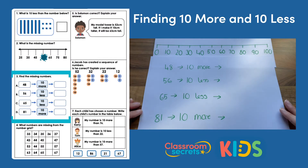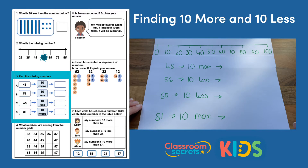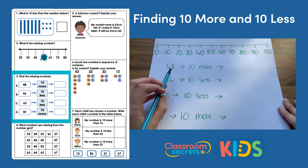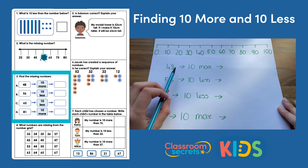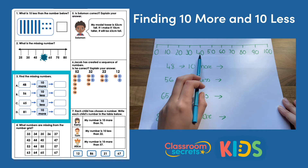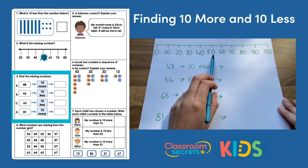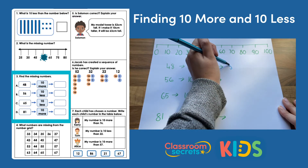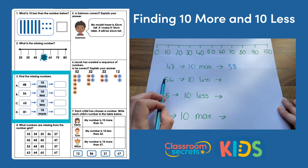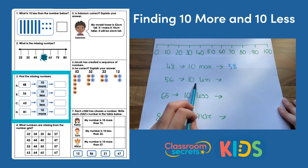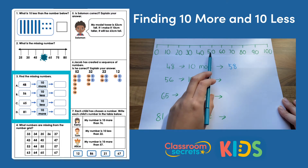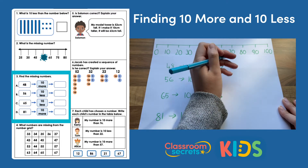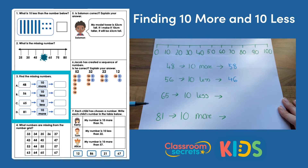The same rule applies here. Remember the ones digit always stays the same. If it's more we add 10, if it's less we take 10 away. So we've got 48 — we need to work out 10 more. 10 more than 40 is 50, the ones stay the same, so it's 58. Then 56, 10 less. 10 less than 50 is 40 and the ones digit stays the same: 46.